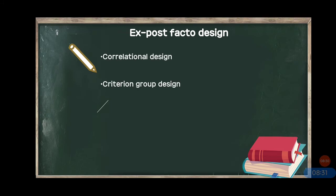For example, suppose we have to know what is the origin of divergent thinking in class 11th and 12th students. We give a divergent thinking test and the scores will range from higher to lower. We then try to know the factors that cause divergent thinking — we look at their family, attitude, family environment, parents' education, their own education, and their adjustment level.